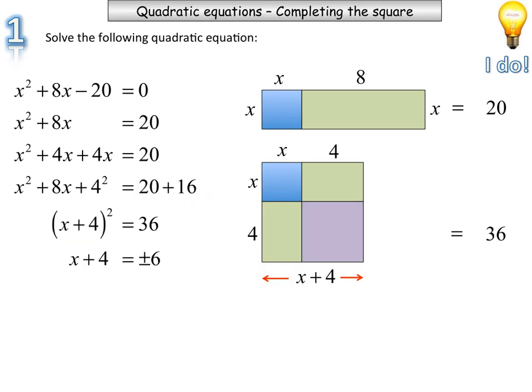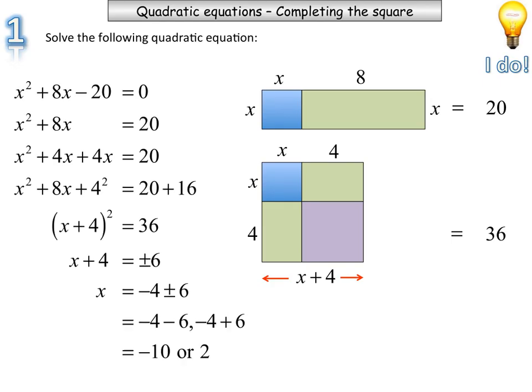Take the square root of both sides, and then you end up getting x plus 4 is equal to plus or minus 6. You need to have the two solutions, plus or minus 6. Get this positive 4 to the other side. And we have negative 4, take away 6, or negative 4 plus 6. And our two solutions are negative 10, or 2.